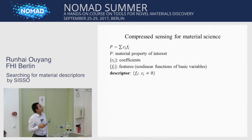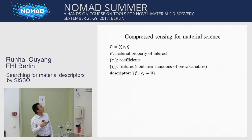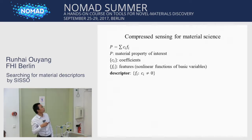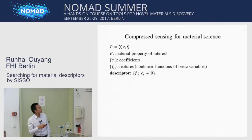Now we apply compressed sensing for material science. For any material property, we describe it by a linear model. Here P is the material property of interest, C are the coefficients, and F are the features, which are nonlinear functions of basic input variables. We then define the descriptor vector to be the set of features with coefficients not equal to zero.